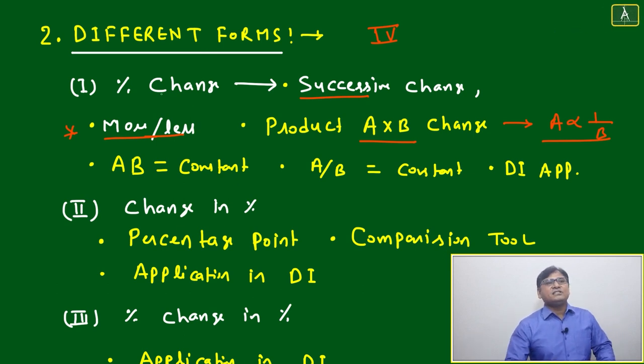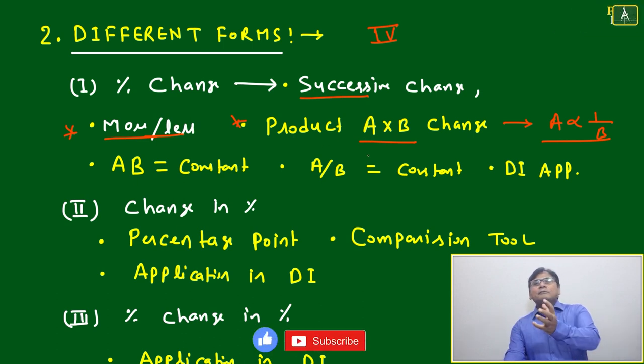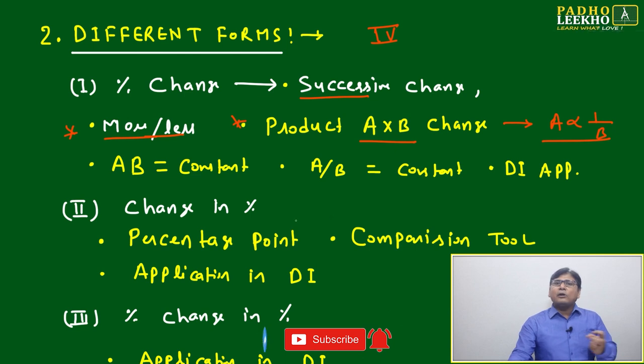Just suppose if A into B is equal to constant, means particularly A is changing, correspondingly B is also changing, but product is same. This is one of the famous categories. You can make one category together - A and B, how much change is there, means total product how much change, or another category.